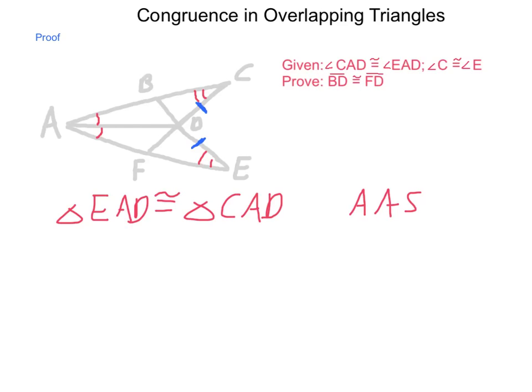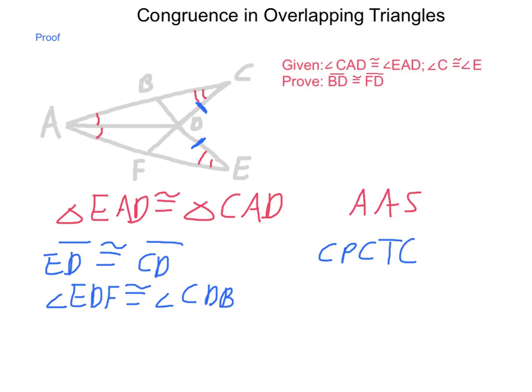by corresponding parts of congruent triangles being congruent. And, looking at our smaller triangles, we would be able to establish that angle EDF is congruent to angle CDB by vertical angles.